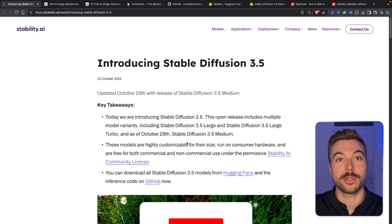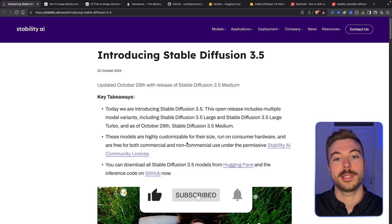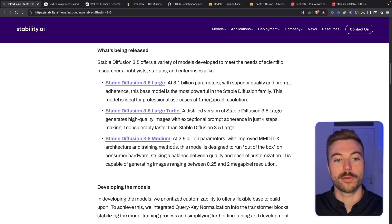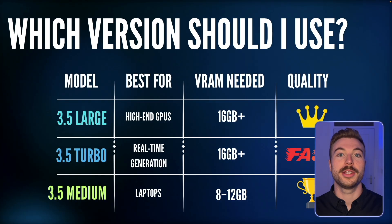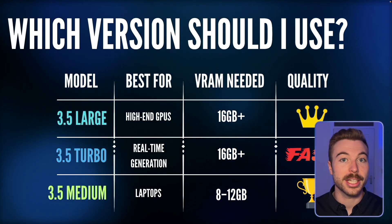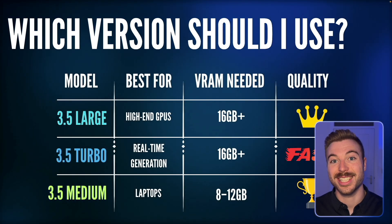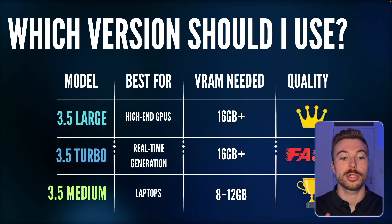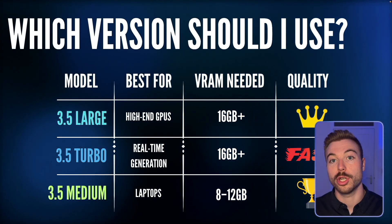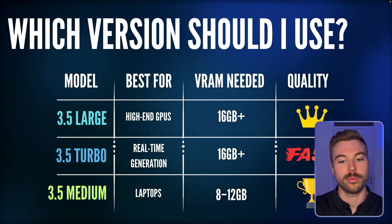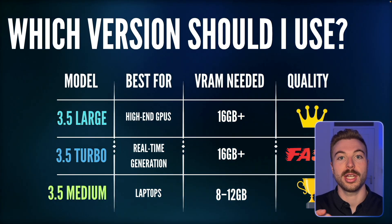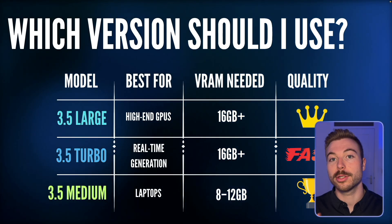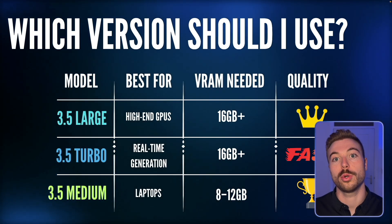First things first, we're going to come across to Stable Diffusion 3.5. This is a great image model developed by Stability AI. There are three different versions: the Large version which has 8.1 billion parameters — really good for high-end GPUs, especially NVIDIA, and you need over 16GB of RAM. Turbo gives more real-time generation but not the same quality. Medium is a great blend of both and can run on a laptop with lower requirements.